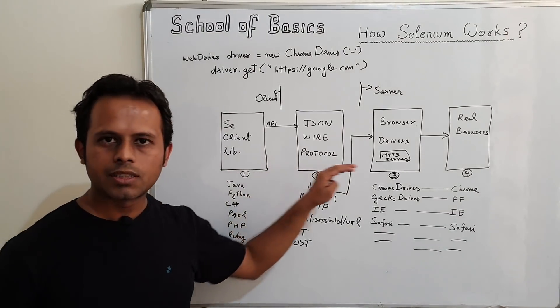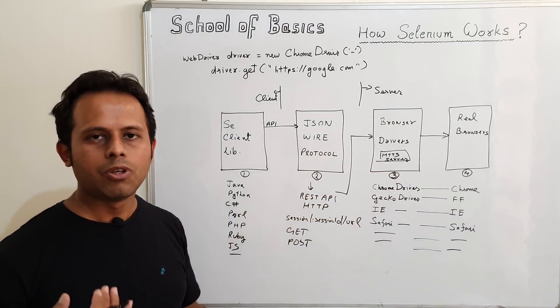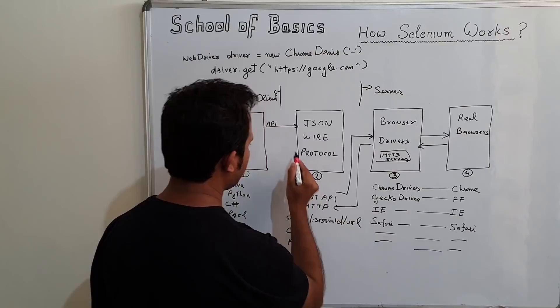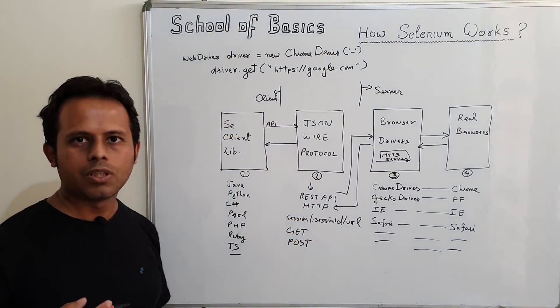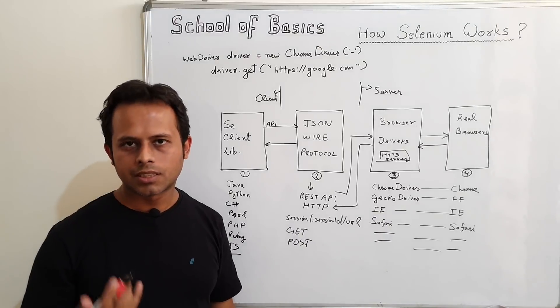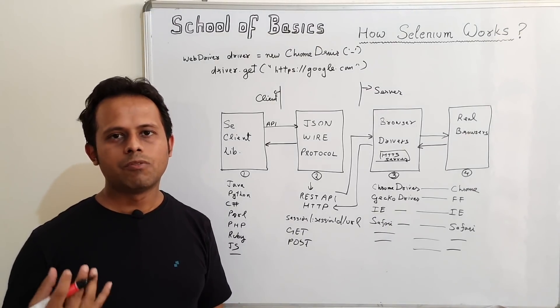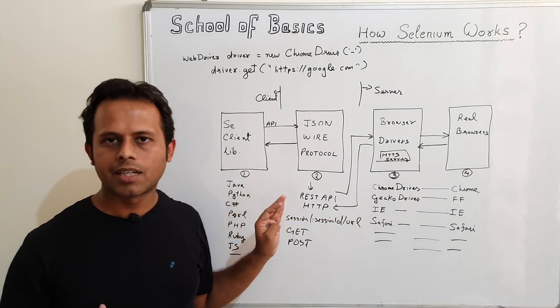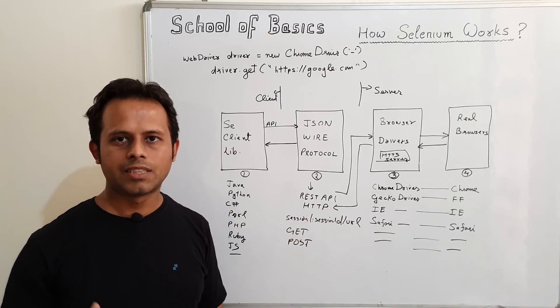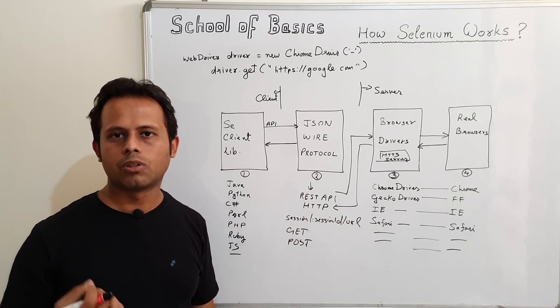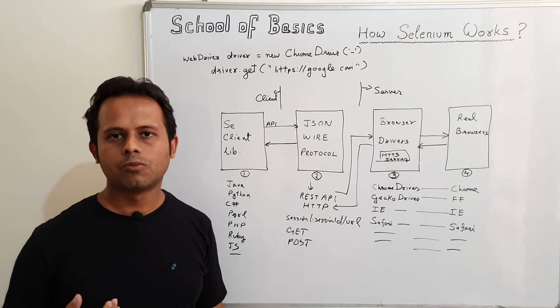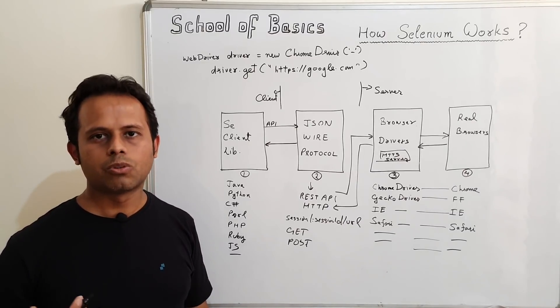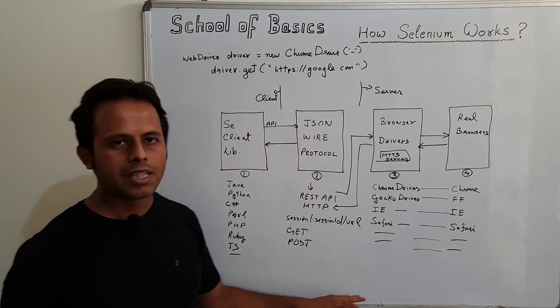This information is not just a single directional information. We also get the response back. In the same way, we will get the response back from browser. It will come here and then it will come to our client and to the IDE. Whatever is the response, whether it is successful response or there is some issue or error, we will get some codes along with some message. With the help of Selenium client libraries, it will get decoded into some meaningful messages and that message you will see in your console. For example, if you are using Eclipse in the Eclipse console, you will see the message whether it was successful or if there was some issue.